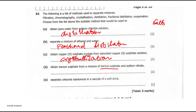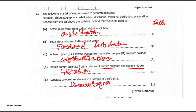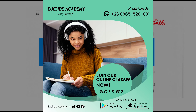Next: obtain barium sulfate from a mixture of barium sulfate and sodium nitrate. Sodium nitrate is soluble, so we could use filtration. Finally, to separate color substances in a sample of a soft drink — we're talking about separation of colors — we use chromatography.